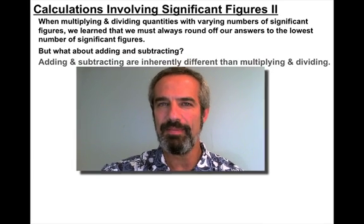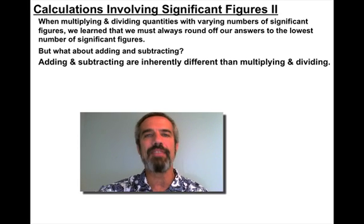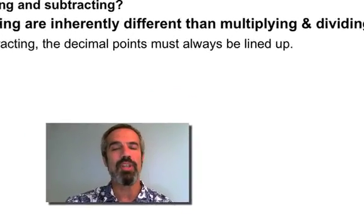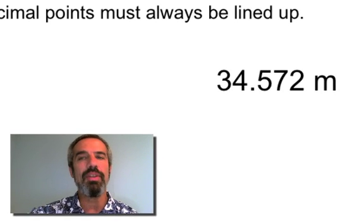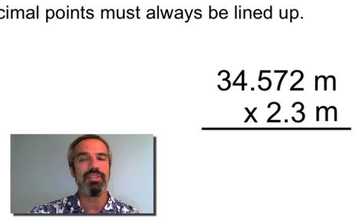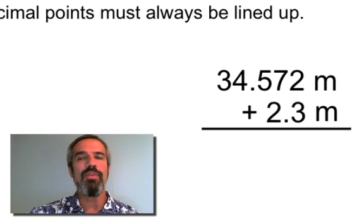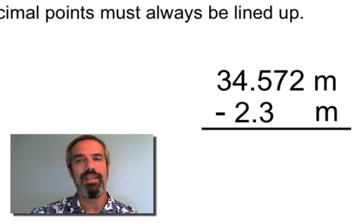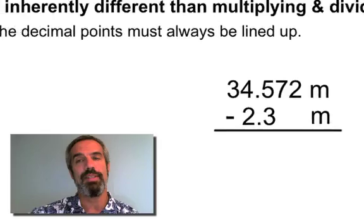But what about adding and subtracting? Adding and subtracting are inherently different than multiplying and dividing. A few things here. For adding and subtracting, the decimal points must always be lined up. For instance, if I had to take 34.572 meters and multiply it by 2.3 meters, I don't have to line up any decimal points. But if I want to take 34.572 meters and add 2.3 meters to it, I have to line up the decimal points. Likewise with subtracting, you have to line up those decimal points.